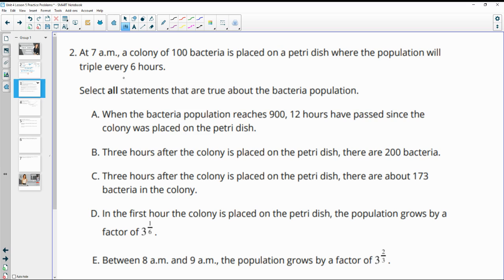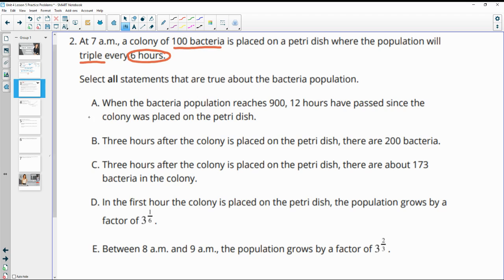Number two, at 7 a.m., a colony of 100 bacteria is placed on a Petri dish and the population will triple every six hours. So select all statements that are true about the bacteria population.